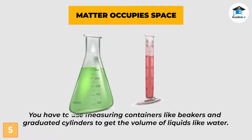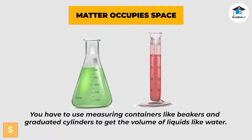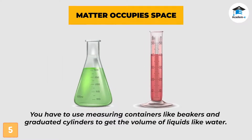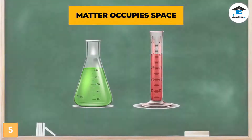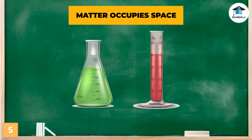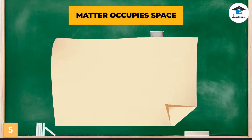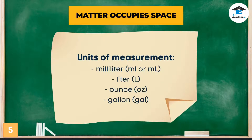You have to use measuring containers like beakers and graduated cylinders to get the volume of liquids like water. Different units are used in measuring the volume of liquids. These include milliliter and liter in the metric system, and ounce and gallon in the English system.